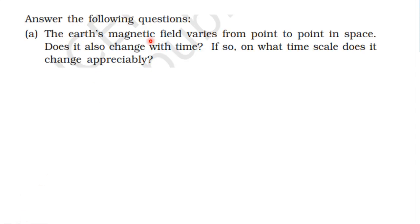First one: the Earth's magnetic field varies from point to point in space. Does it also change with time? If so, on what time scale does it change appreciably? Actually, Earth's magnetic field is place to place, the field strength is different at each point. In a given small region, the field is marked. Over large distances, the field changes.